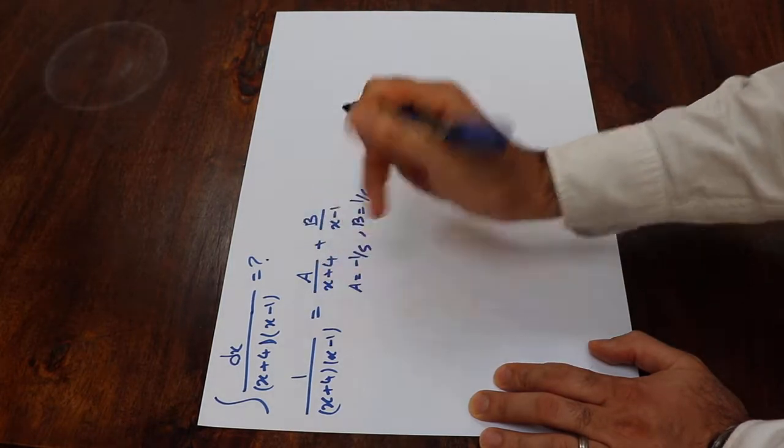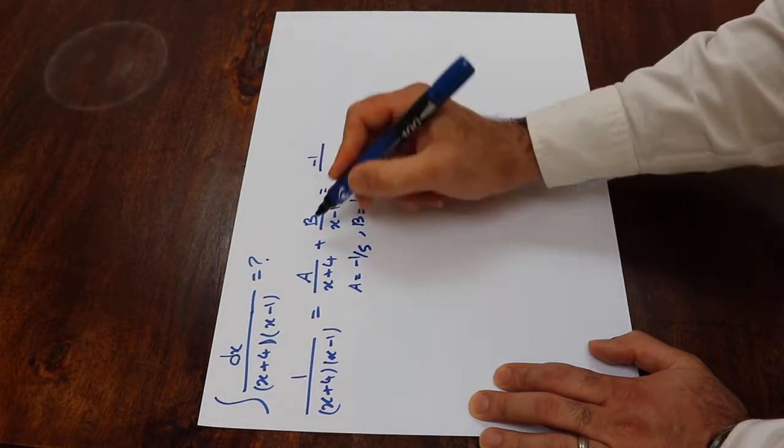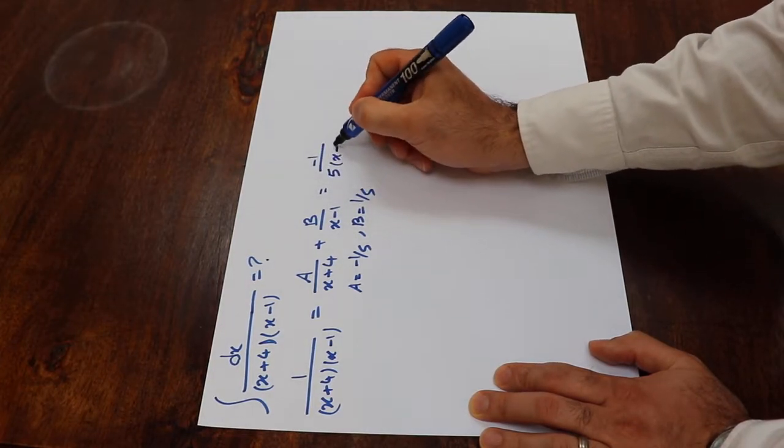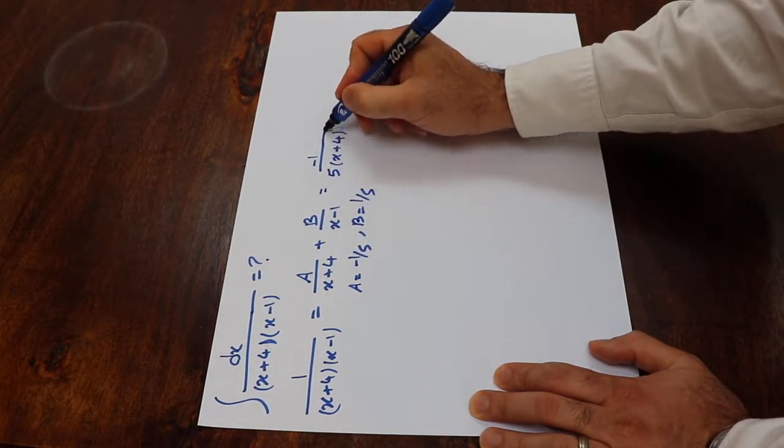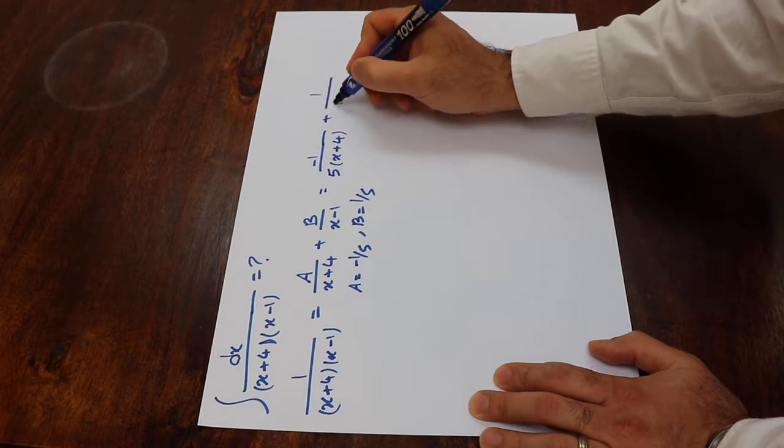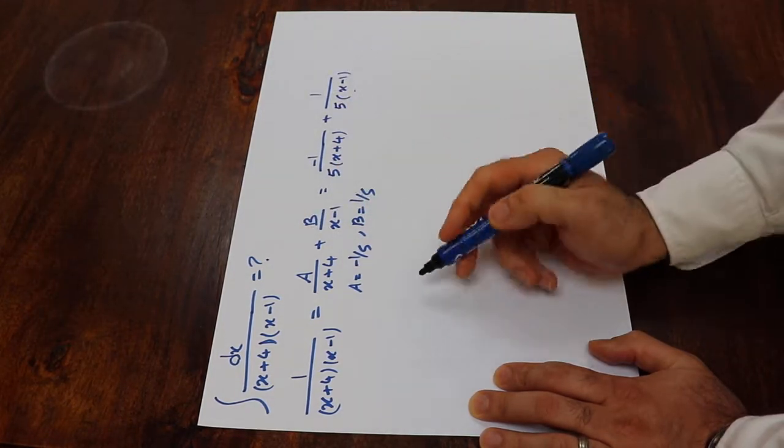And if you now substitute these values here, therefore you can rewrite this as minus 1 divided by 5 times x plus 4, because a is minus 1 divided by 5 plus 1 divided by 5 times x minus 1 because b is 1 divided by 5 times that.